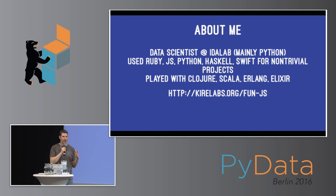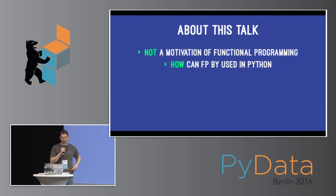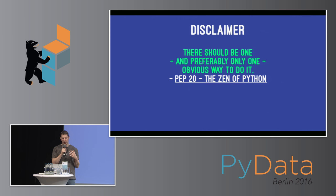I've given similar talks on functional programming in a specific language before — for example, one about JavaScript. This talk will not be a motivation of functional programming; others have already done that. It's mainly a how-to: how can you use functional programming in Python. There is a disclaimer: Python has a certain philosophy — it's very approachable because most of the concepts are very simple. And many of the things I'll show you are kind of going against that philosophy.